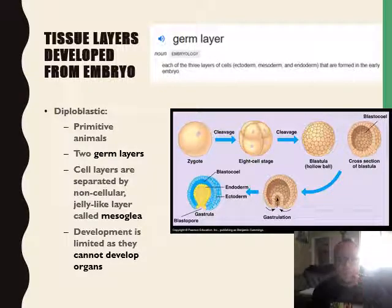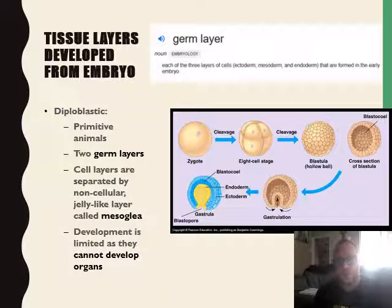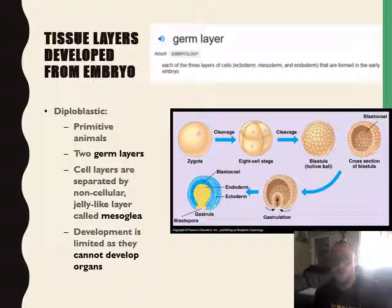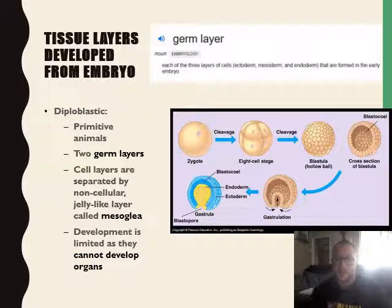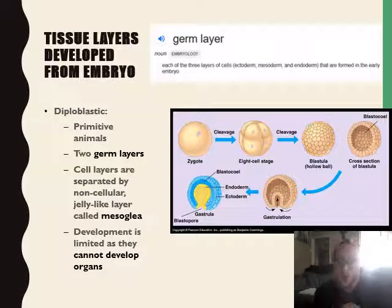Now we're going to be looking at the tissue layers developed from the embryo. Looking at the diagram on the right, you have a zygote — that's when a sperm and an egg fuse, giving a diploid individual. Then it starts to divide rapidly. This is just for explanation purposes. Eventually we create something called a blastula, which is a hollow ball. If we look at the cross section, it actually starts to fold in on itself — that is called gastrulation. The arrows show a dimple forming, which eventually pushes and grows to the inside of the hollow ball, creating a tube within a tube, or a ball within a ball.